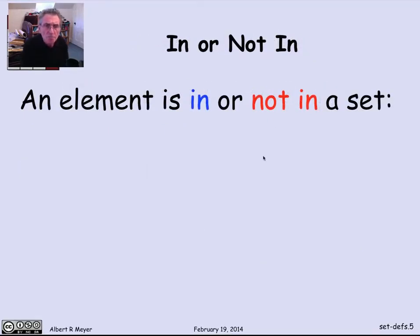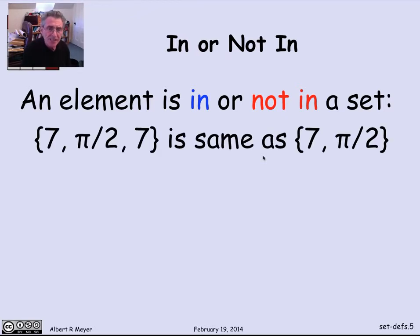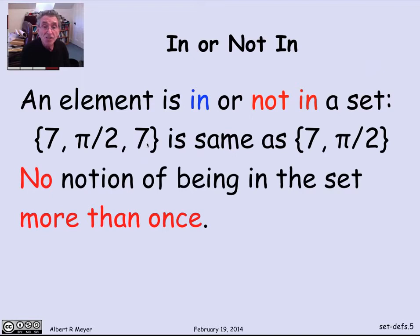So another basic thing to understand about the notion of a set is that an element is either in a set or not in a set. So if I write down 7 pi over 2 7, this is the same description of the same set as 7 pi over 2. I'm just telling you the same thing twice here, that 7 is in the set and the 7 is in the set again.